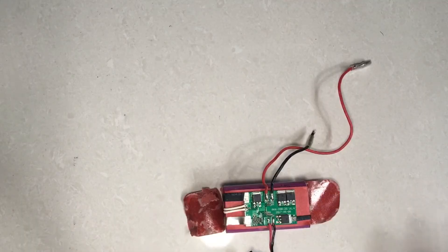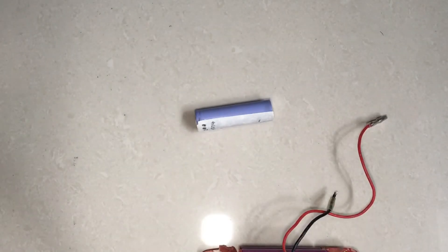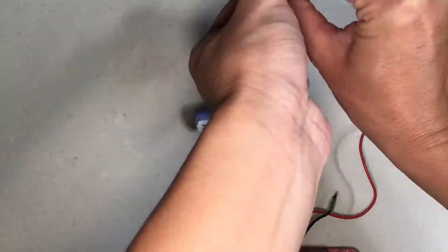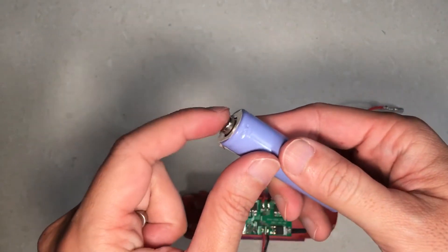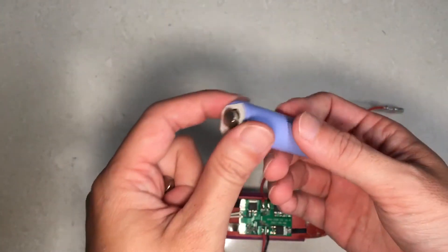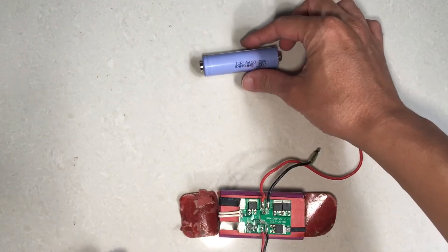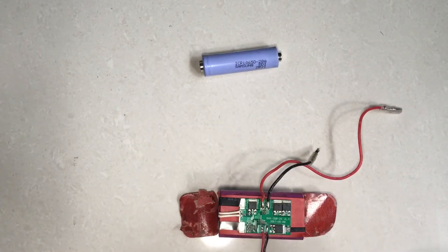So what I'm going to do is try to charge this using another 18650 cell. Hopefully it is enough to reactivate the control board. Hopefully it's not too late, hopefully it's not over-discharged to the point that it is unrecoverable. So here I am using a neodymium magnet which will make it easy for me to hold on to the crocodile clips.